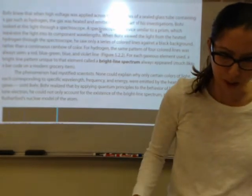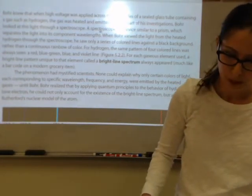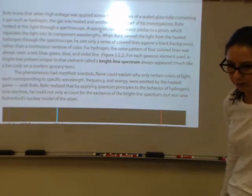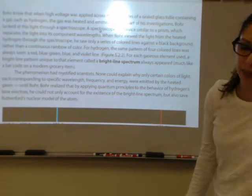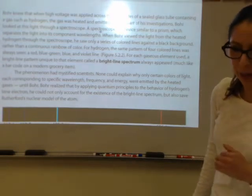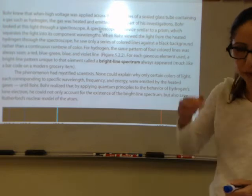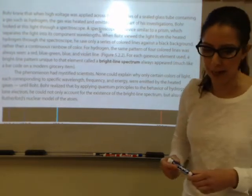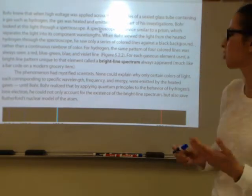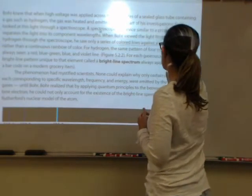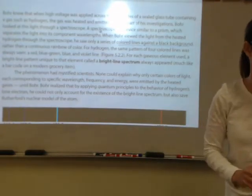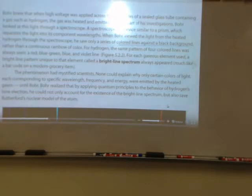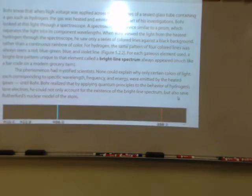When a high voltage was applied across the electrodes of a sealed glass tube containing a gas, the heated gas emits light. Bohr looked at that light through a spectroscope — a device with a prism that separates light into its wavelengths. Bohr viewed a series of colored lines against a black background; he didn't see a continuous rainbow of color, which would mean various energies were being observed corresponding to wavelengths.